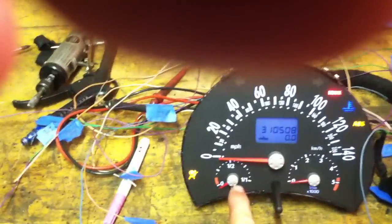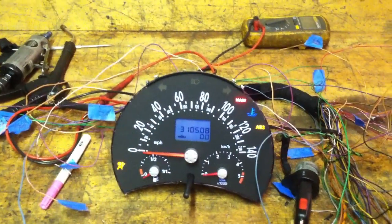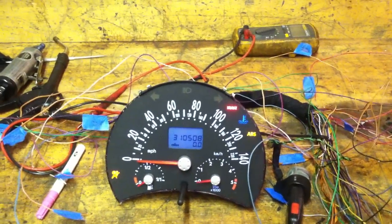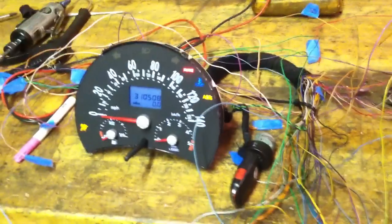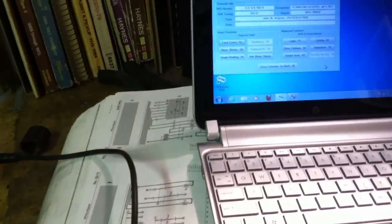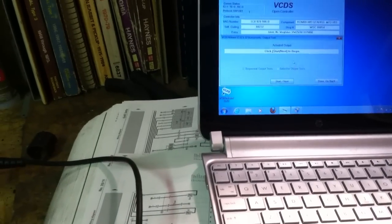I can't get the fuel sender to work. According to the Bentley, it goes through, like, it uses a ground through the engine coolant temperature sensor. It's real weird. Having a problem with that. So I was thinking maybe my gauges were dead. But if I go to done go back. Output test. Begin.